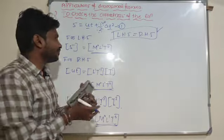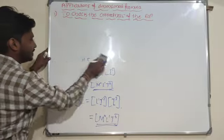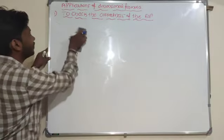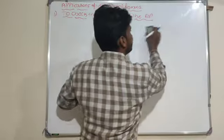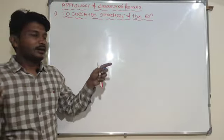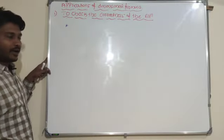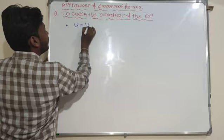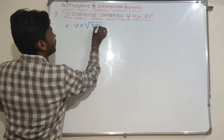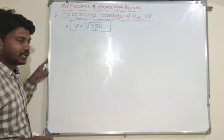Let me give one more example. We will write the dimensional formula for escape velocity. Just we can verify whether this equation is dimensionally right or not. V represents velocity, G represents acceleration due to gravity, R represents radius in terms of length.